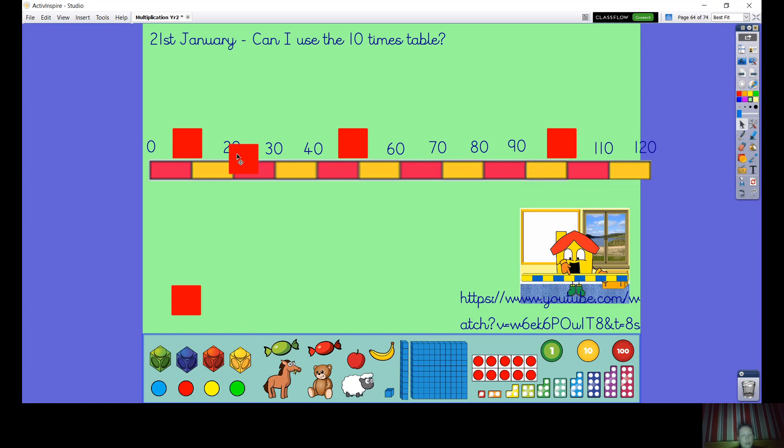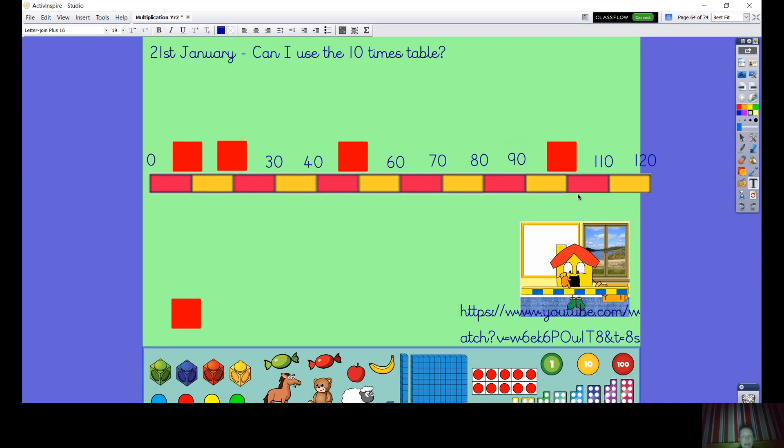Backwards: 120, 110, 100, 90, 80, 70, 60, 50, 40, 30, 20, 10. Let's cover a few of those up. Let's have another go at counting in tens: 0, 10, 20, 30, 40, 50, 60, 70, 80, 90, 100, 110, 120. Backwards: 120, 110, 100, 90, 80, 70, 60, 50, 40, 30, 20, 10.